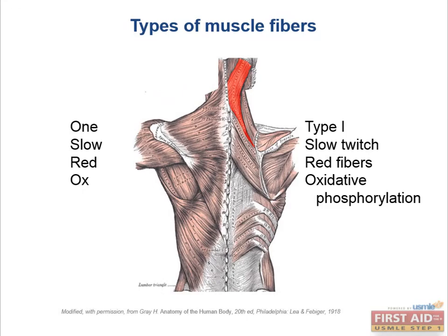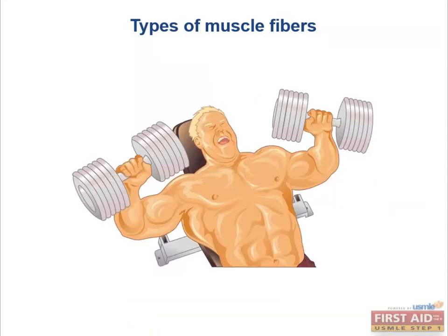Which muscles are slow twitch? Slow twitch muscles tend to be the postural muscles — for example, your paraspinal muscles. These muscles have long sustained contractions, like when you're walking or sitting up straight. This allows ample mitochondria to go through oxidative phosphorylation and create enough ATP to continually power these muscles. In contrast, fast twitch muscles are white because they do not have a lot of mitochondria or myoglobin; they primarily use anaerobic glycolysis. Fast twitch muscles include muscles like your biceps or your extraocular muscles, and this is also the type of muscle that commonly hypertrophies in weight training.